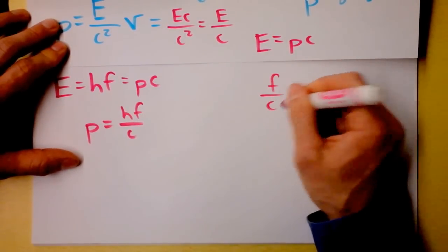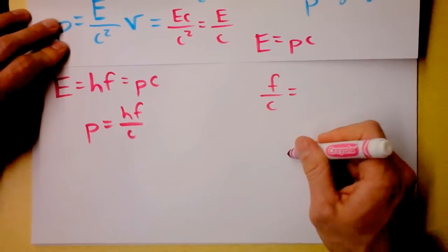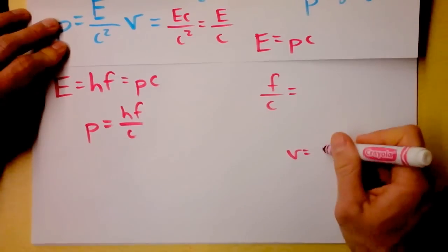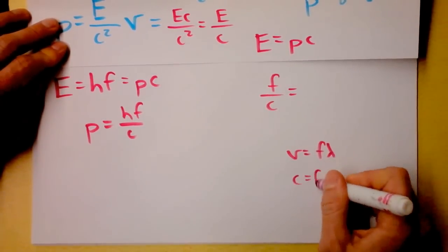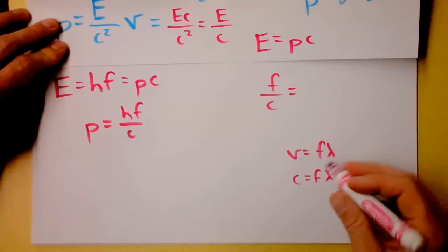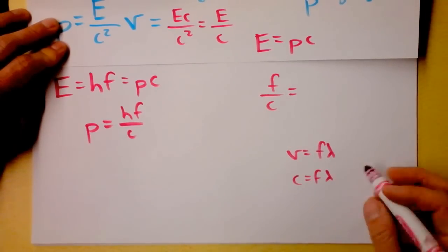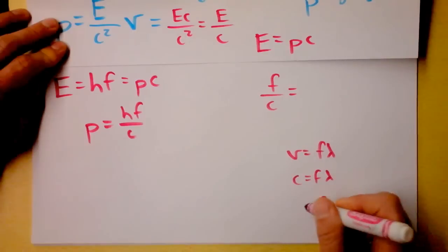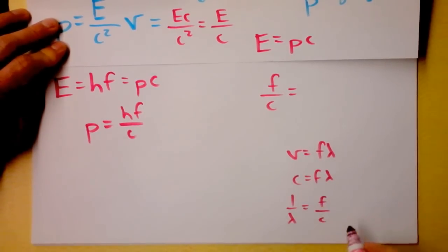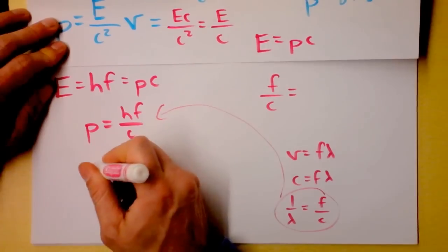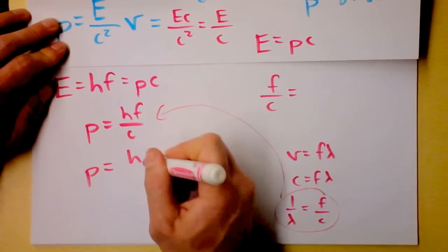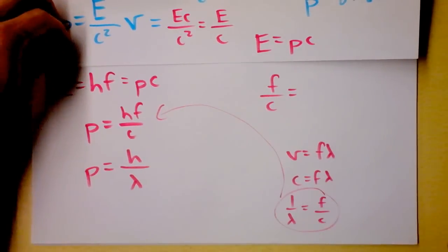But wait. Frequency over the speed of light. That reminds me of something. I remember that the speed of a wave is its frequency times its wavelength. And so if I say C is F times lambda, and I solve this for F divided by C, I'm going to find F divided by C is 1 over lambda. So I can take this and go up here and say that the momentum of a photon is H-bar divided by that photon's wavelength.